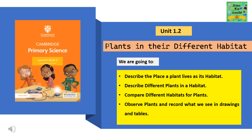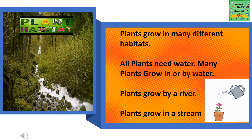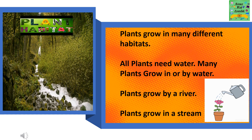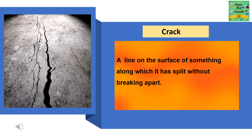Plant habitats: plants grow in many different habitats. All plants need water. Many plants grow in or by water. Plants grow by a river and plants grow in a stream.